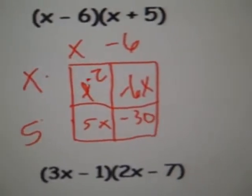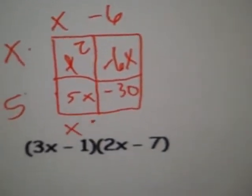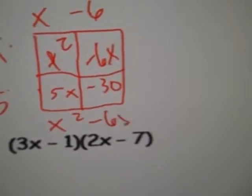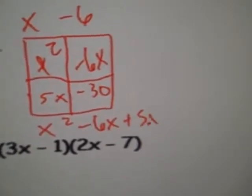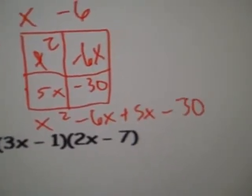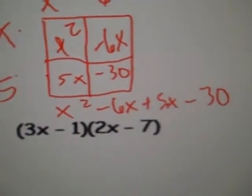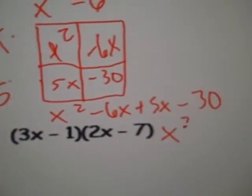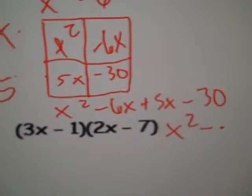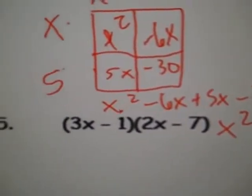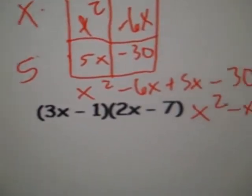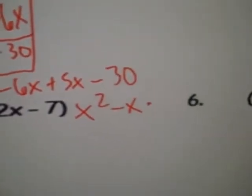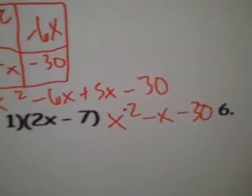I write all these four terms down in a horizontal line. x squared, minus 6x, plus 5x, minus 30. I can combine those like terms, negative 6x and positive 5x. That gives us negative x. And I just write the other two terms that I did not combine separate. And I have my answer.